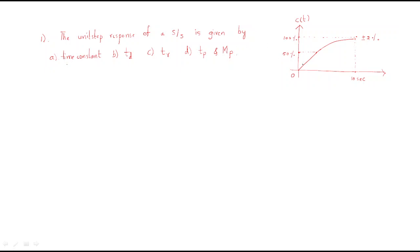Looking at the waveform, it starts from 0 and for 10 seconds it will not reach 100 percent — it will have a tolerance of plus or minus 2 percent. The diagram indicates this tolerance, and this is the unit step response, meaning the output will finally reach a magnitude of 1.